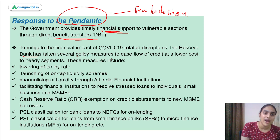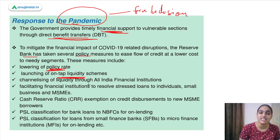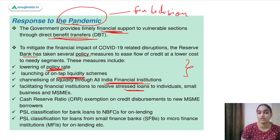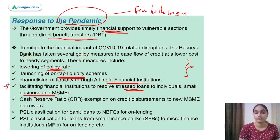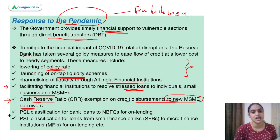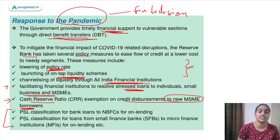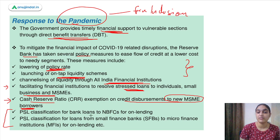RBI lowered policy rates, came up with on-tap liquidity schemes, and channelized liquidity through different All India Financial Institutions. There was also a resolution framework for stressed loans to individuals, small businesses, and MSMEs. A CRR exemption was provided for credit disbursements to MSME borrowers — meaning no portion of that lending needs to be kept as cash reserve. Additionally, priority sector lending was extended to new areas including loans to NBFCs for onward lending.